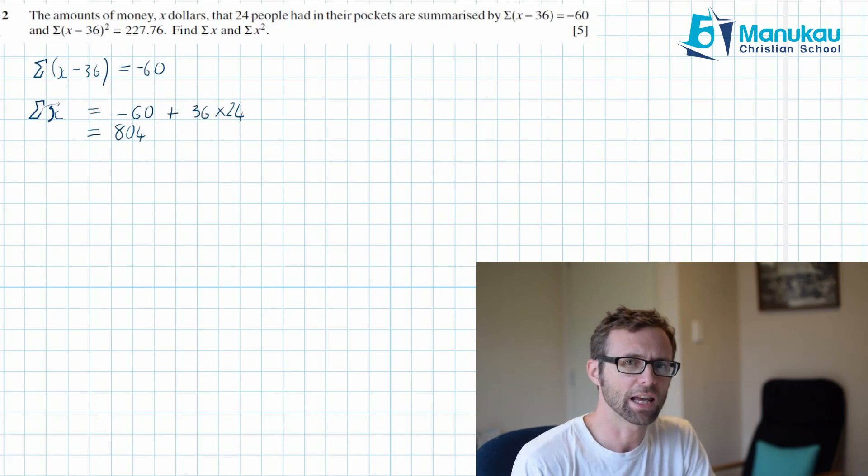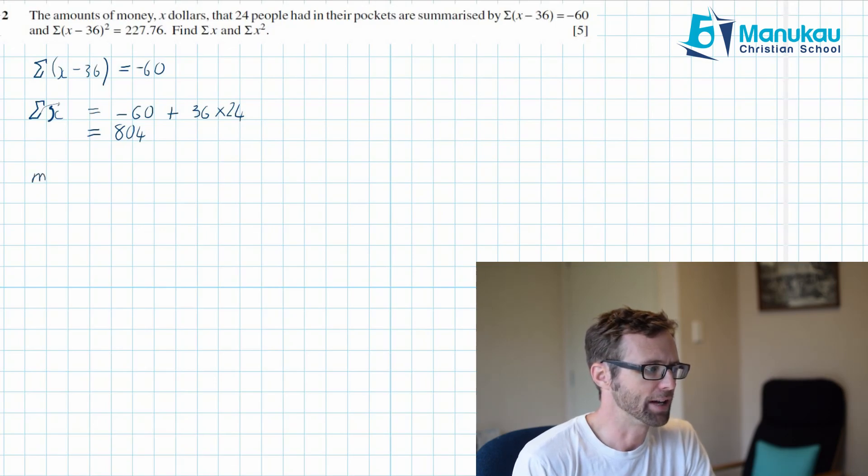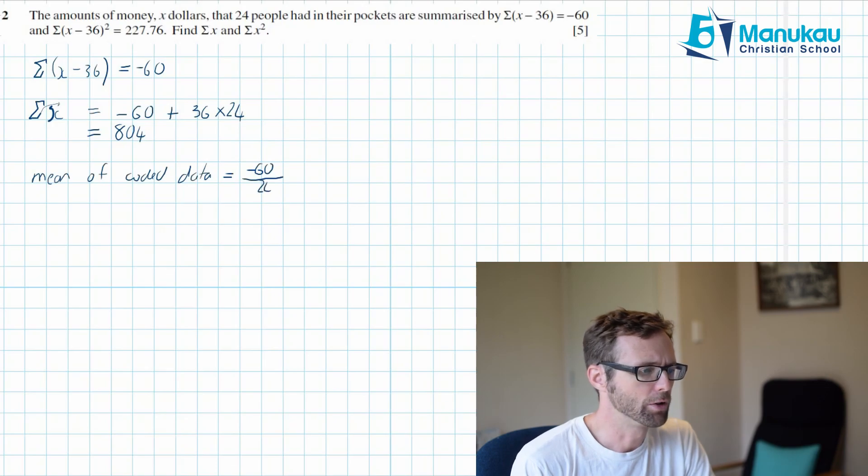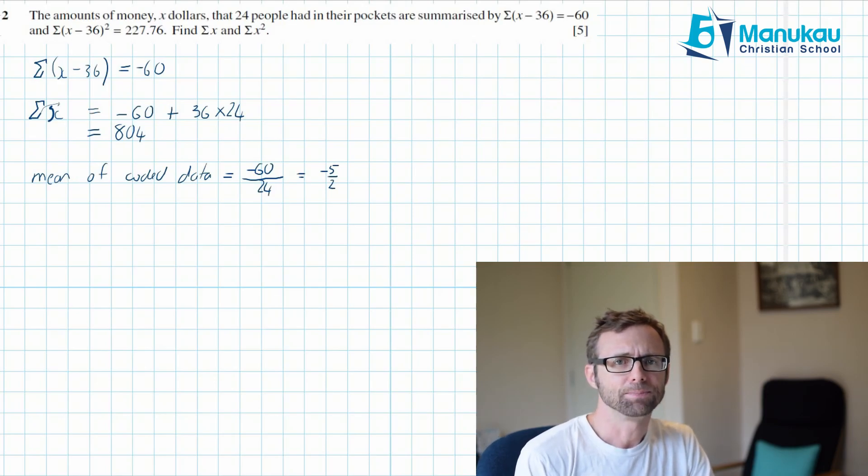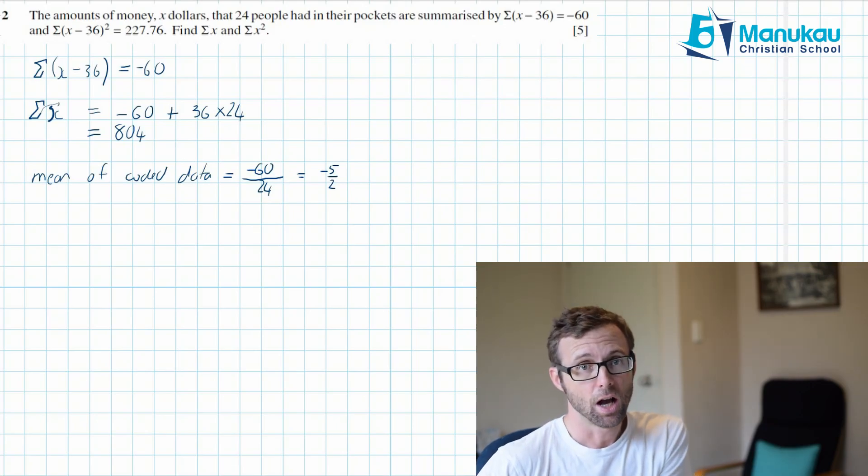There's an alternative way of doing this and it might be worth thinking about this as well just for clarity's sake. You can work out the mean of your coded data. So the mean of the coded data is going to be minus 60 over 24. Sum of X minus 36 all over the frequency or the 24 people that we have. And this will give you the answer of minus 2.5 or minus 5 over 2. Now what happens to the mean of the uncoded data? Well it is simply going to be 36 higher than this.